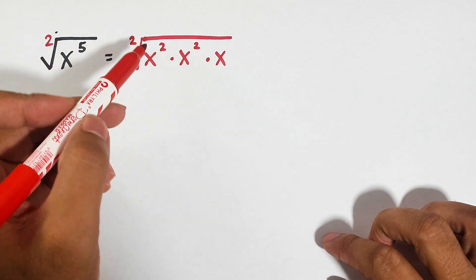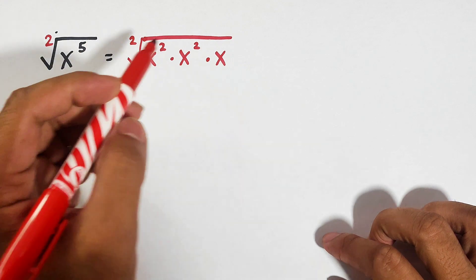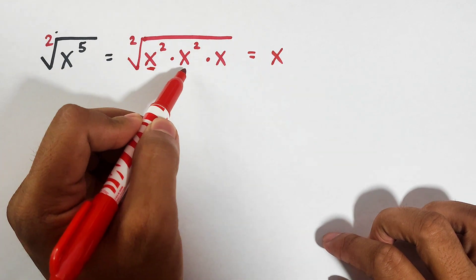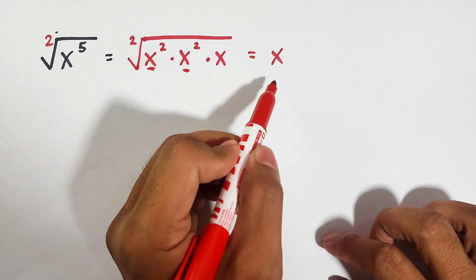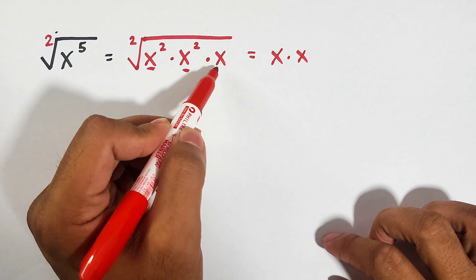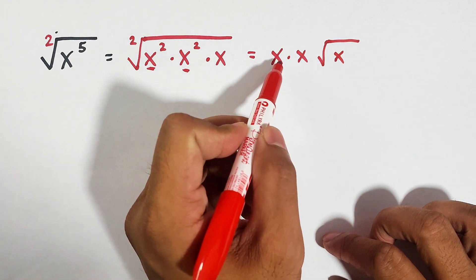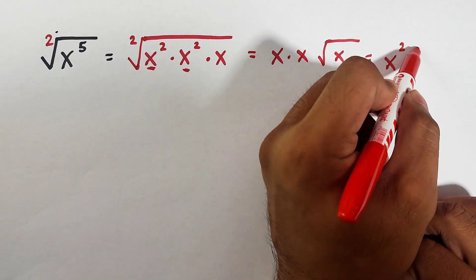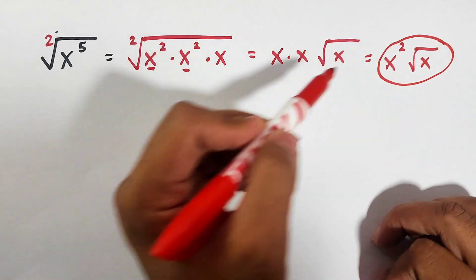As you can see, I break it down wherein these factors are all perfect squares. When we get the square root of x squared, the answer is x — there will be an x outside. When we get the square root of x squared again, there will also be an x outside. Since this last one is not a perfect square, it will remain inside the radical sign. So you can simplify this as x times x, that would be x squared times the square root of x. This is the answer for this item.